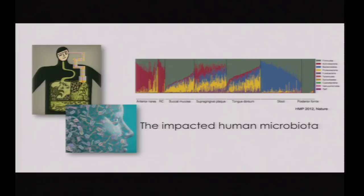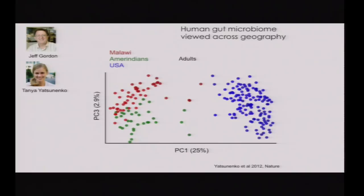So how impacted is the human microbiota that the HMP has studied? In a collaboration with Jeff Gordon, we studied gut microbiota across geography, comparing Amerindian Guajibos from Venezuela with Malawi people and people in the U.S. In this principal coordinate analysis, the U.S. clusters really apart, with people from the two other continents clustering together.